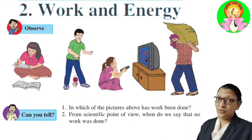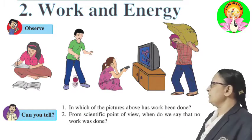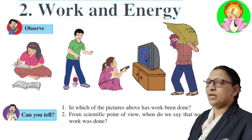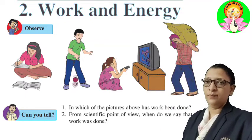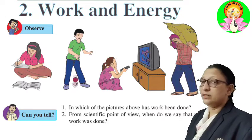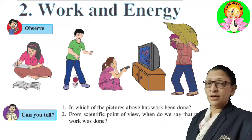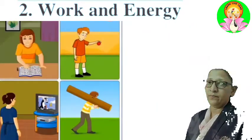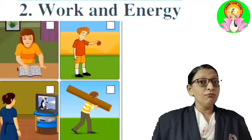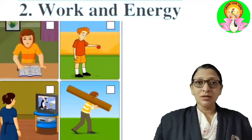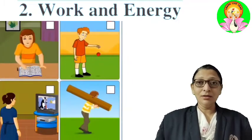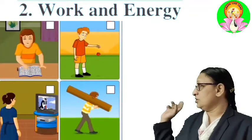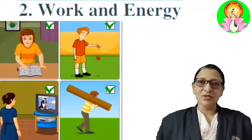Observe these pictures. In the first picture a girl is sitting and reading; in the second picture a boy is playing with a ball; in the third picture a girl is watching television; and in the fourth picture a man is carrying loads and walking. Can you tell in which of these pictures work has been done? You are right - in all four pictures we say work has been done.